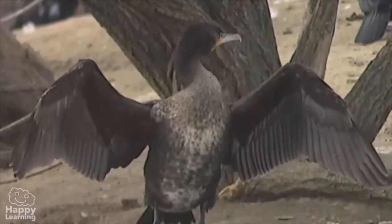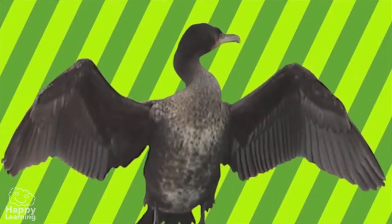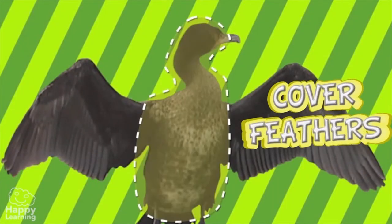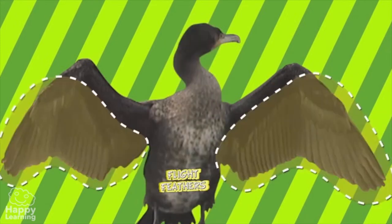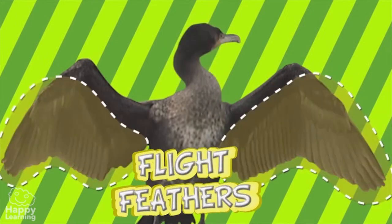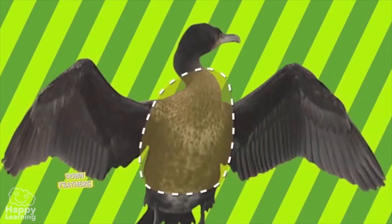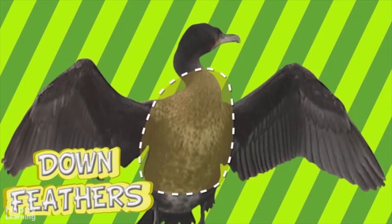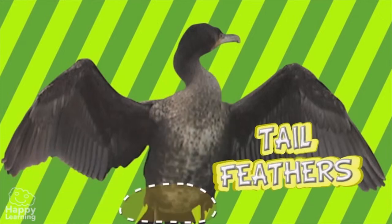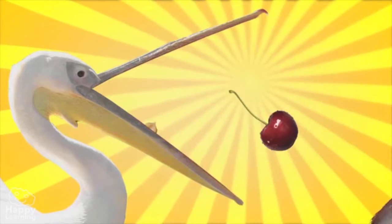Birds have four types of feathers: those that cover the whole body; flight feathers in the wings that help them to fly; down feathers, which cover the chest and belly and maintain a constant temperature; and tail feathers that help guide the bird's body like a rudder on a boat. Birds can be classified into several groups according to what they eat.